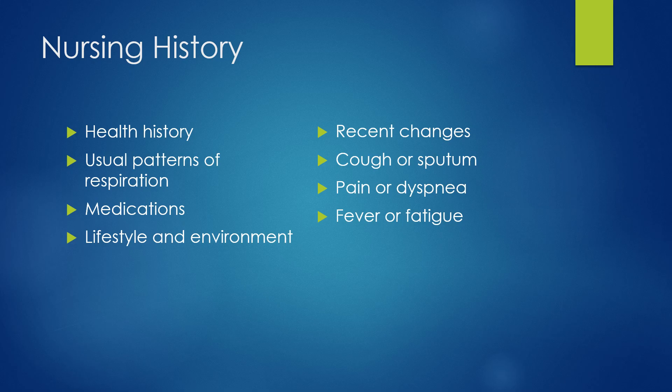After gathering health history and background, we can start asking about the symptoms they're having. We want to know what their normal breathing was like before these changes, when the symptoms started, how long they've been going on, and where the symptoms are occurring, like any chest pain or discomfort. We need to ask about aggravating factors, what makes it better or worse, and what other symptoms they're noticing. We also want to know how long the breathing issues have been affecting their activities of daily living.